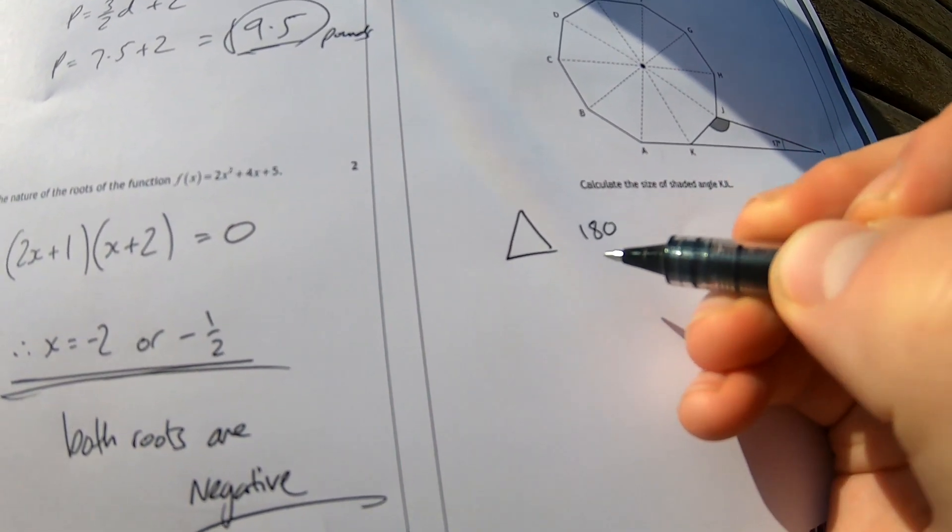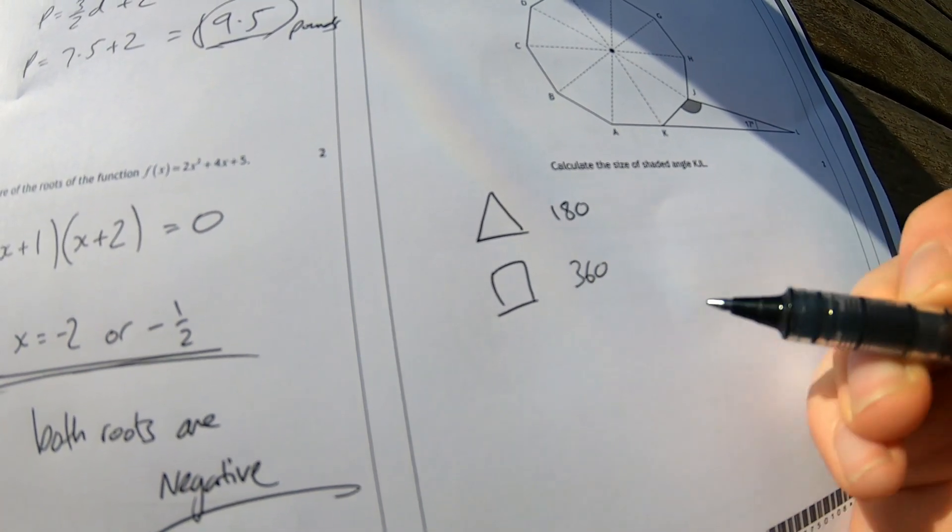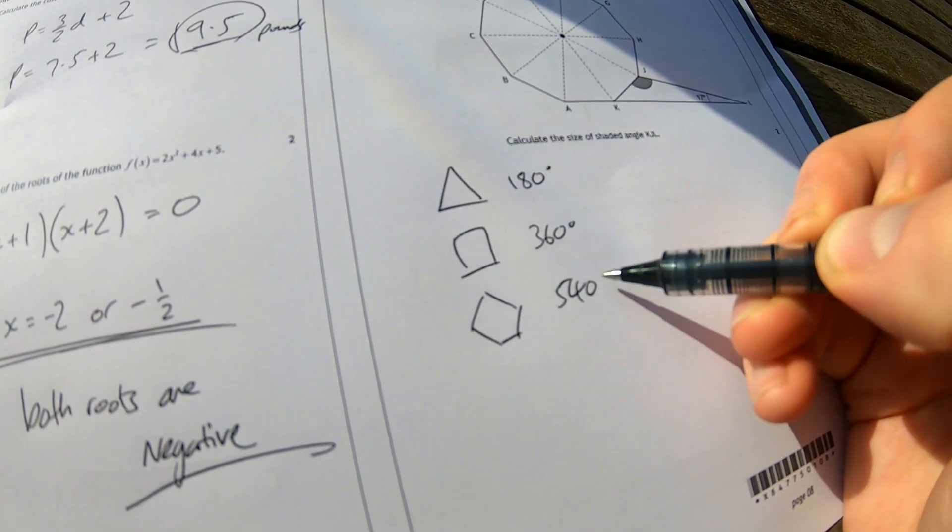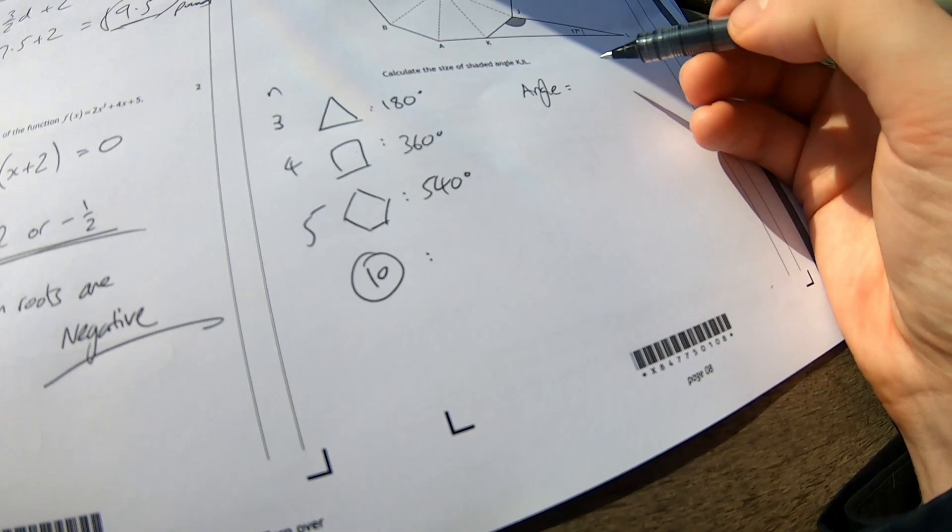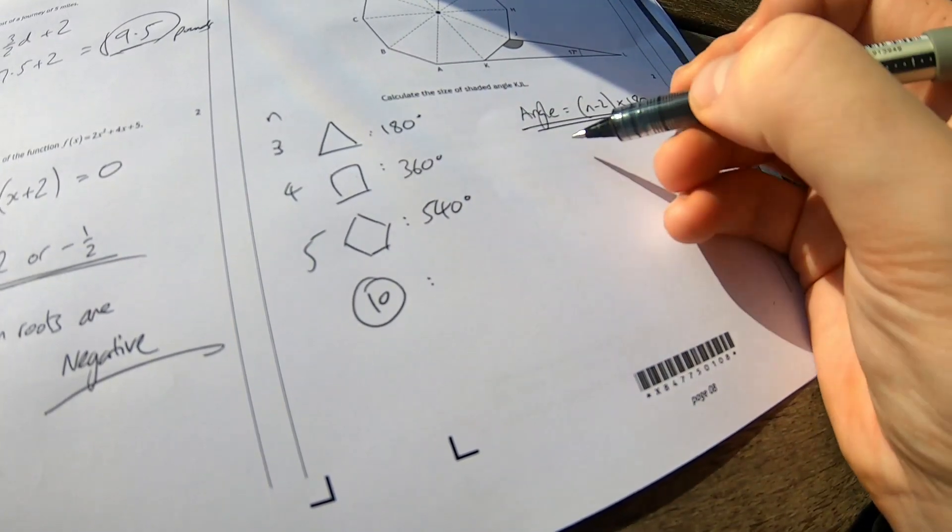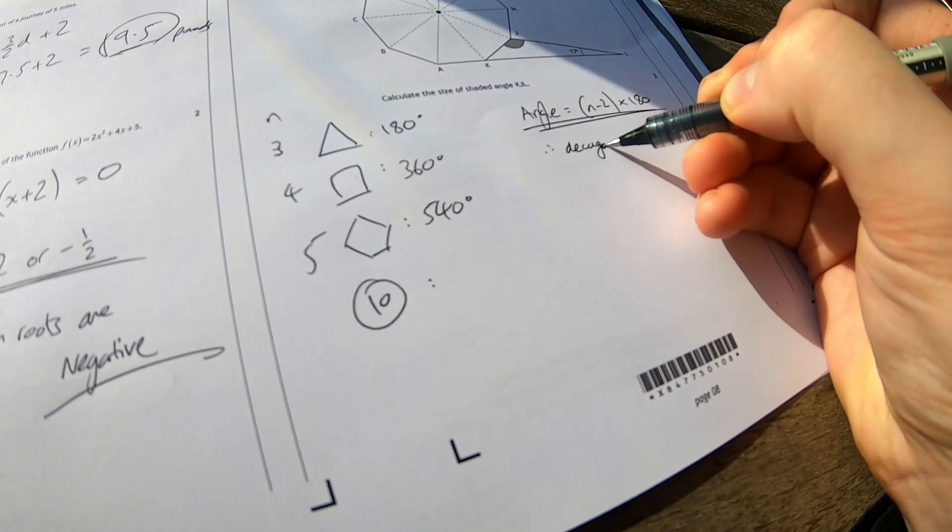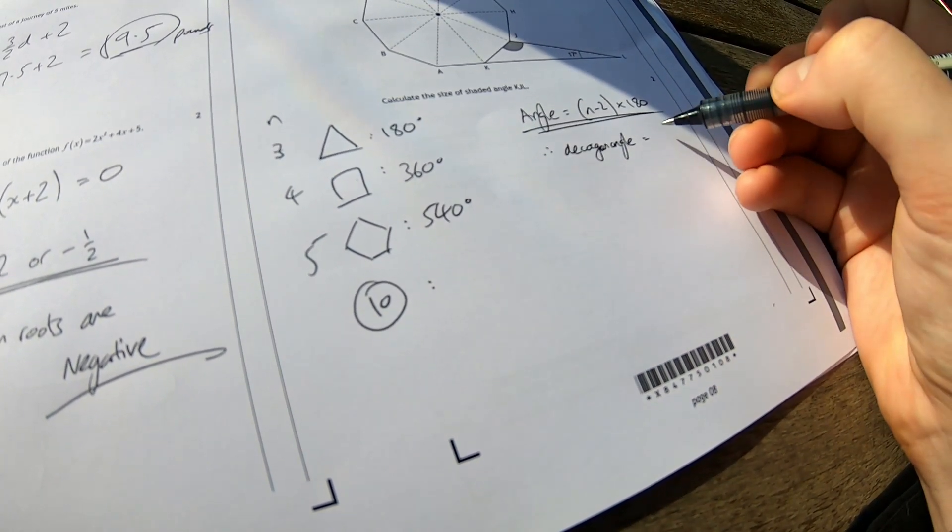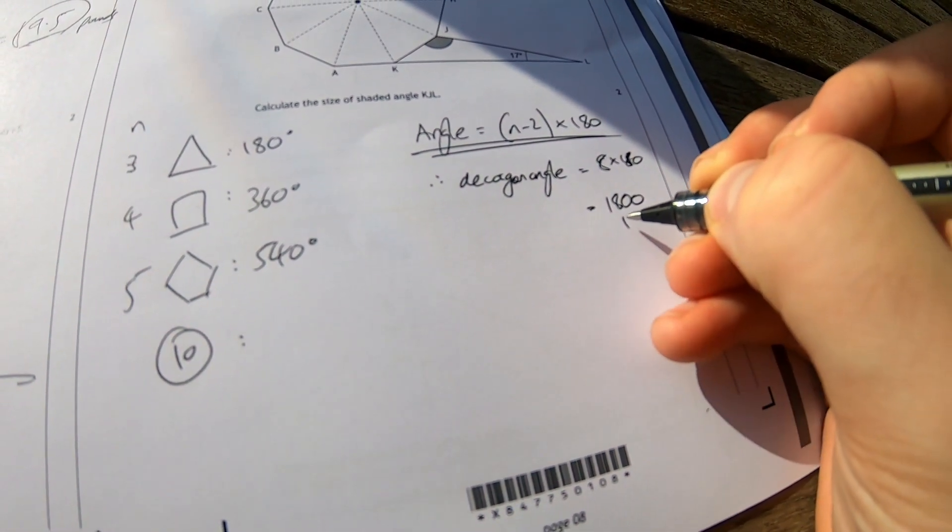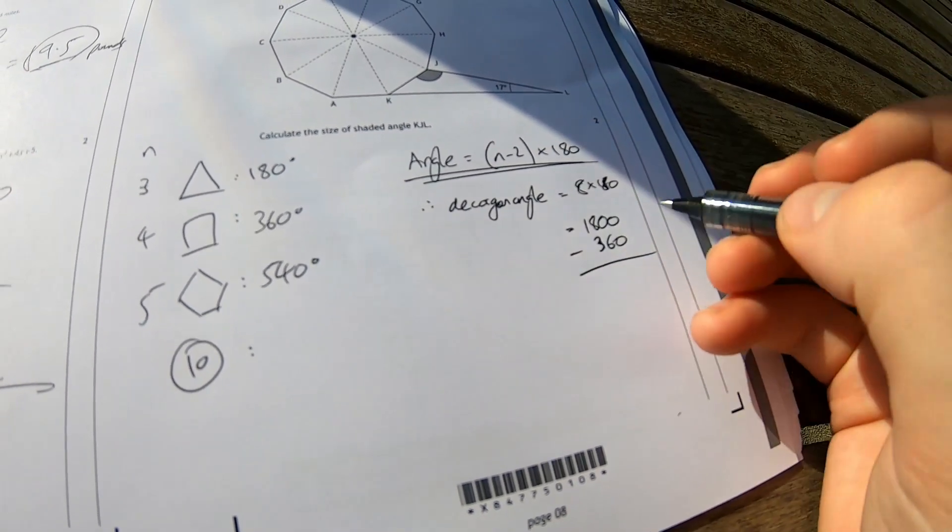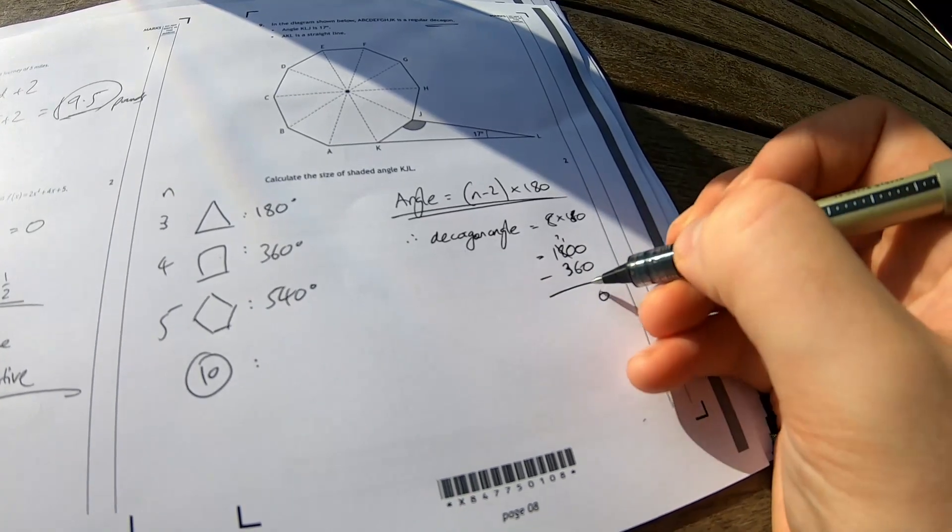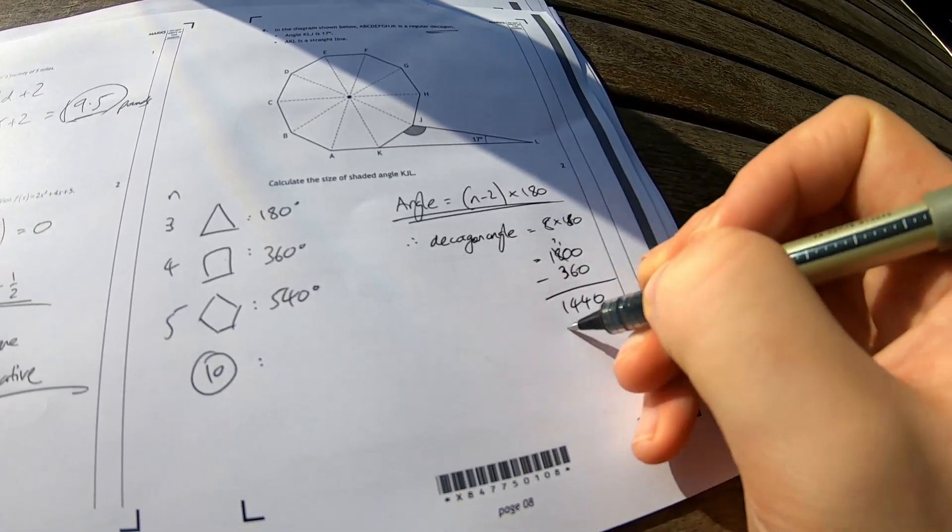Triangle adds up to 180. Square adds up to 360. I've already got the pattern here. Pentagon must add up to 540. The angle equals n minus two times 180. Therefore decagon angle, interior angle is equal to eight times 180. That's 1800 minus 360. Which is 1440. There we go.